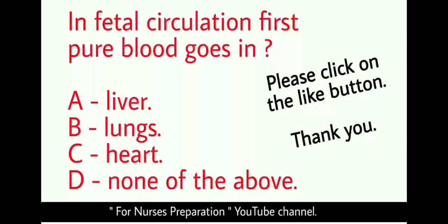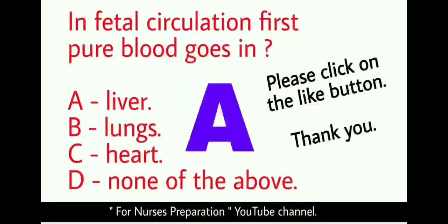In fetal circulation, which organ does first pure blood go into? Option A: liver, Option B: lungs, Option C: heart, Option D: none of the above. The right answer is Option A. In fetal circulation, first pure blood goes into the liver.